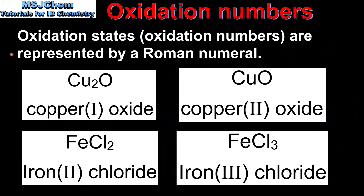Next we'll look at how oxidation states — or oxidation numbers — are represented by Roman numerals. In copper(I) oxide and copper(II) oxide, the I and II refer to the oxidation state of the metal ion. Copper(I) has a plus 1 oxidation state; copper(II) has plus 2. Similarly, iron(II) chloride has Fe2+ with oxidation state plus 2, and iron(III) chloride has Fe3+ with oxidation state plus 3. When you see a Roman numeral in a compound name, it refers to the oxidation state of the metal.